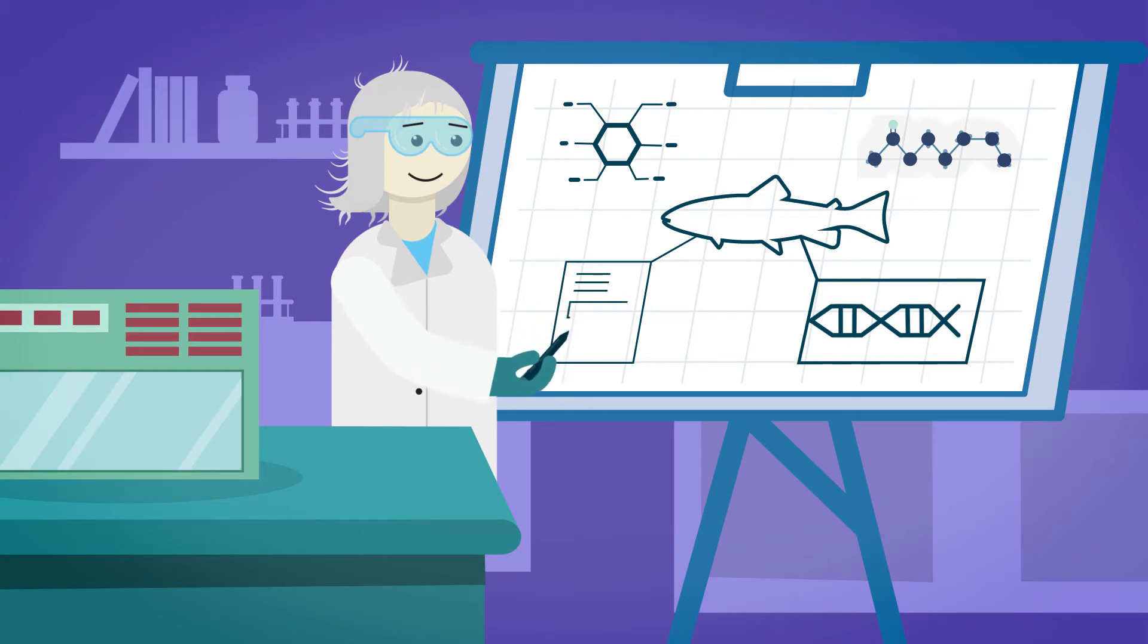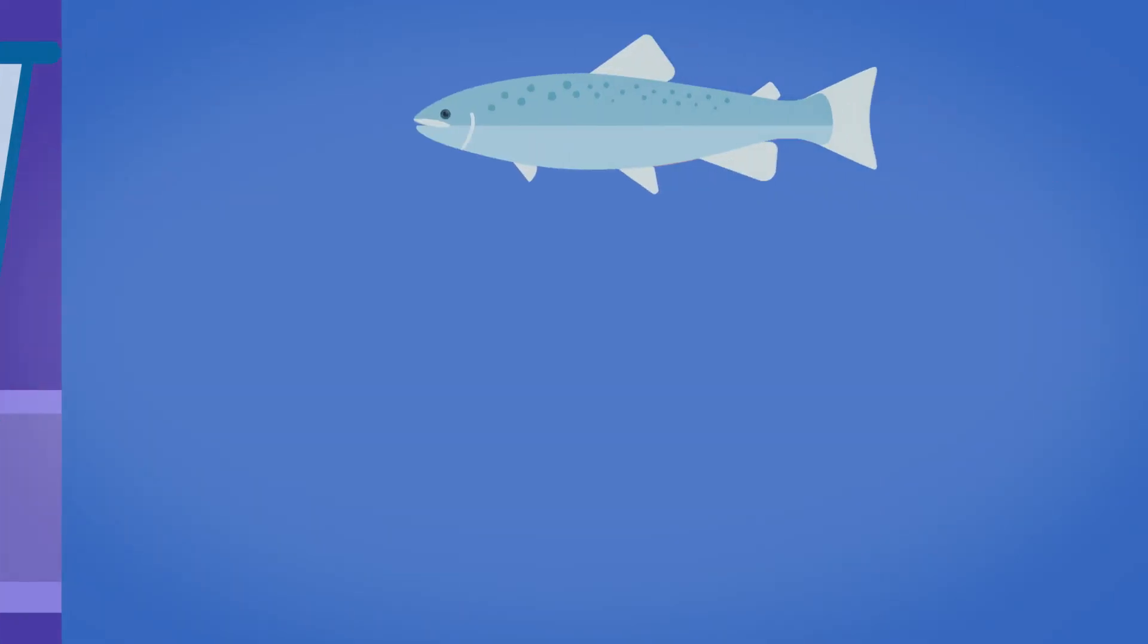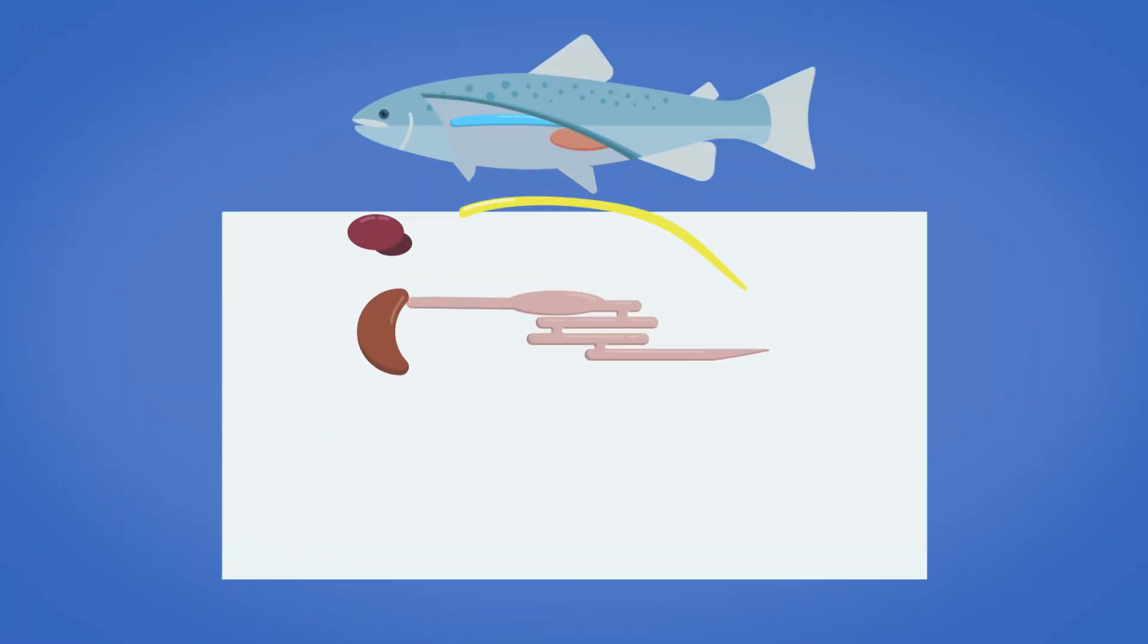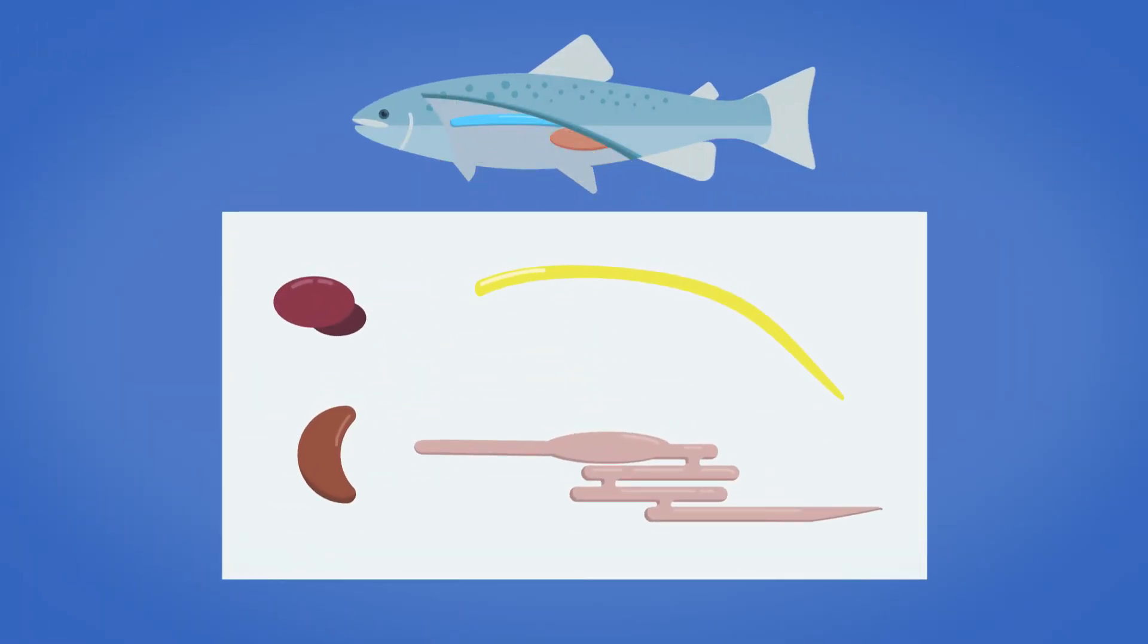Systems biology addresses complex interplays in biological systems. The digital salmon research program aims to build a collection of mathematical models of the life processes in the salmon body.